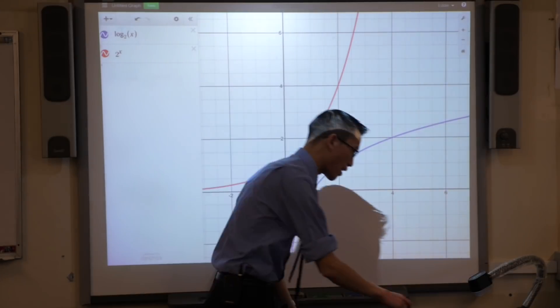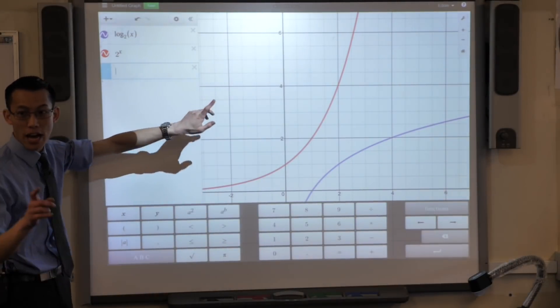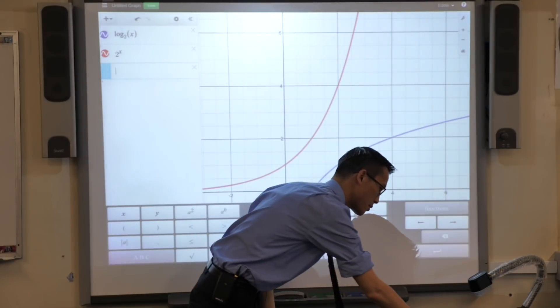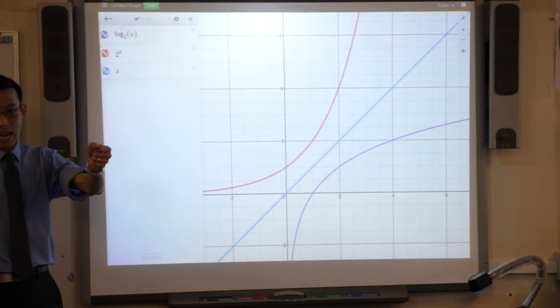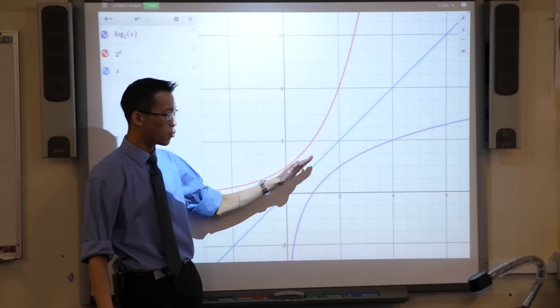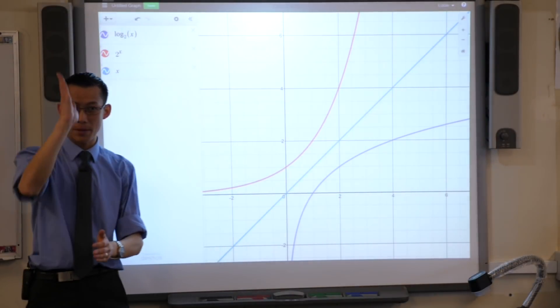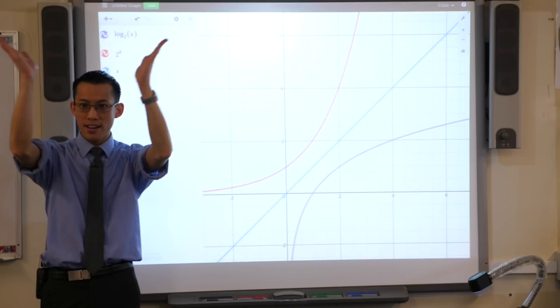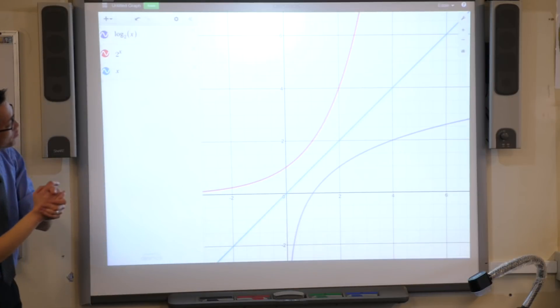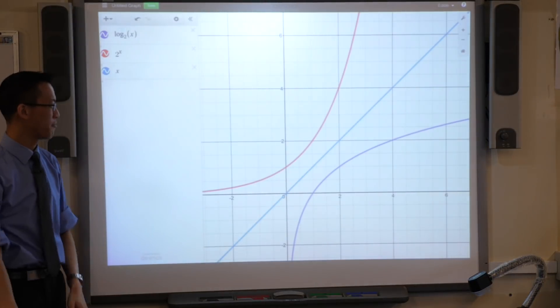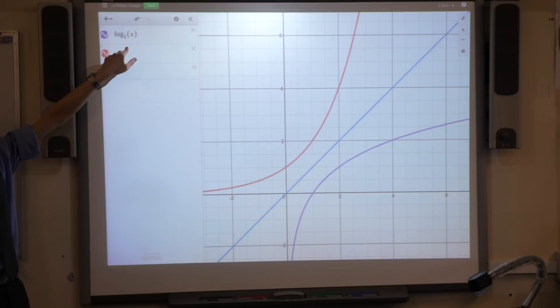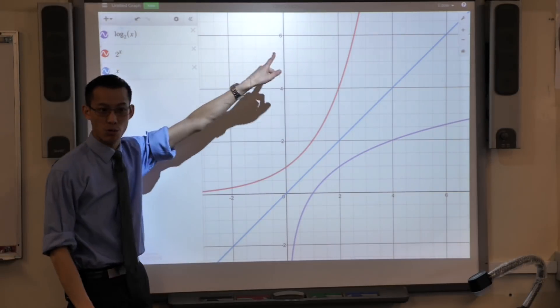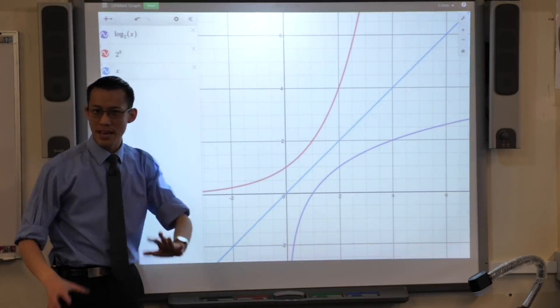One more thing. Underneath your two equations over here I want you to just type X. Now if you want, pick up your screen, pick up your laptop and just retain it so this Y equals X line is straight up and down. Do you see it? Can you see that you've got that symmetry there? So our log graph is just a reflected version of this exponential graph. That's their relationship. Does that make sense?